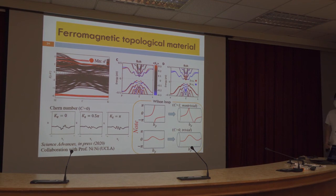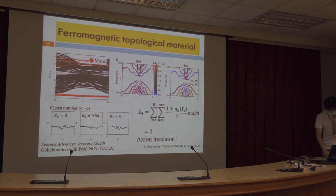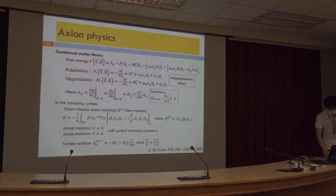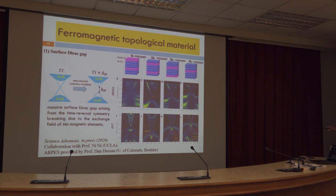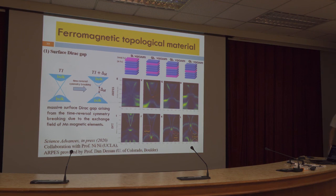We use a Hubbard U correction in this calculation. We use U equal five. But U does not affect the topology — U will only affect the shape of the band. We found that whether we use U equal zero or U equal eight, the topology remains the same — this system still shows the axion insulator behavior. So the topology doesn't change. U here refers to the on-site Coulomb energy in the DFT+U method.